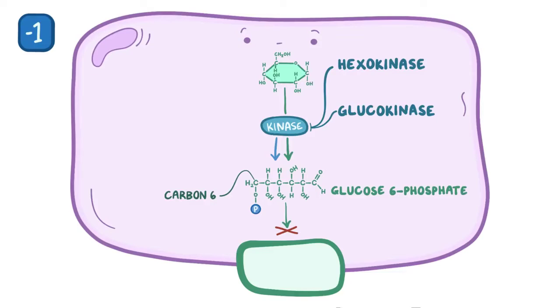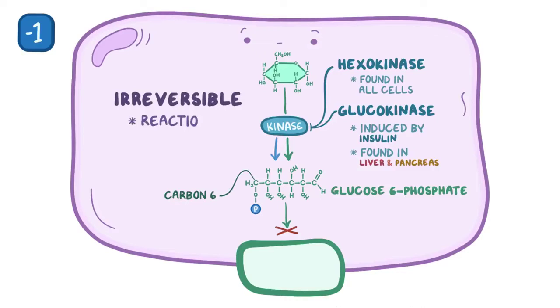Both enzymes pretty much do the same thing, but hexokinase is found in all cells, whereas glucokinase, like glucose transporter 2, is induced by the presence of insulin and is found in the liver cells and the beta cells of the pancreas. This first step is irreversible, meaning that the reaction can only go in the glucose to glucose-6-phosphate direction, and not vice versa.